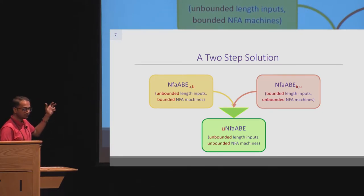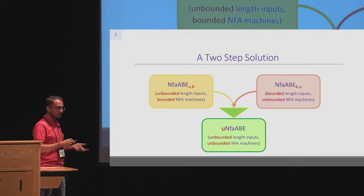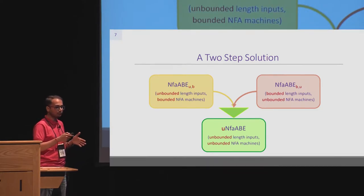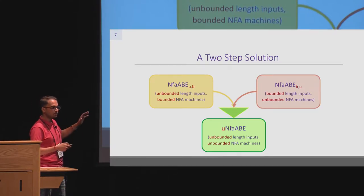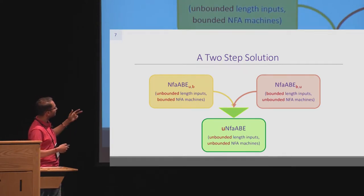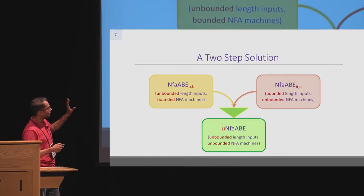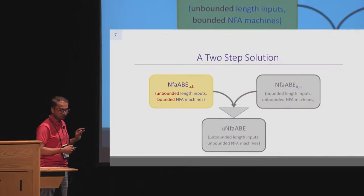We have a two-step solution to construct this primitive. The first step consists of constructing two building blocks: the yellow box is ABE for NFA with unbounded attribute length but bounded size NFAs (call it U,B), and the red box is ABE for NFA with bounded attribute length and unbounded size NFAs (call it B,U). In step two, we combine them to get unbounded in both coordinates — unbounded attributes and unbounded NFA machines (the green box, call it U).